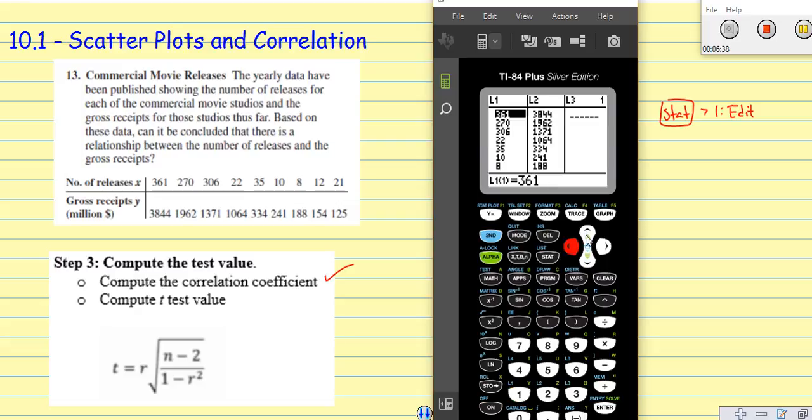At this point, and I've already entered the numbers into my table. You need to go ahead and either clear this list, so you can just sit here on top of the numbers and just delete until you delete them all through. Or you can go up on top and press up on L1, press clear, press enter, and that will clear the whole list for you.